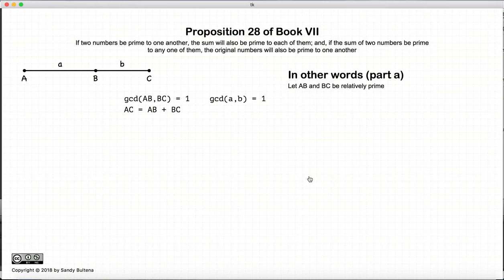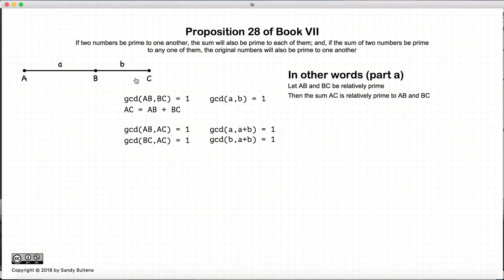Now, in this proposition, we have two numbers, AB and BC, and if these two numbers, AB and BC are relatively prime, then AB will be relatively prime to the sum, which is AC, and BC will also be relatively prime to the sum.